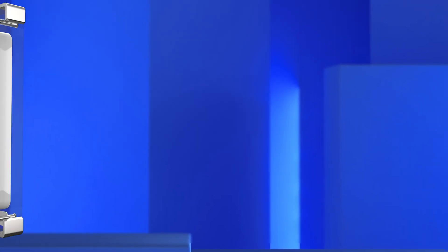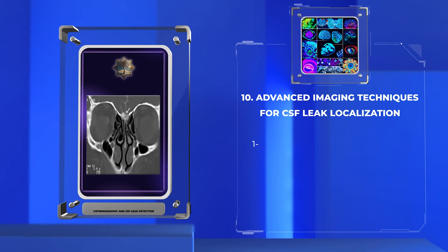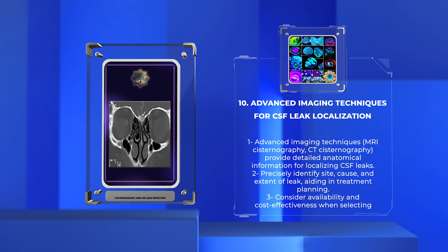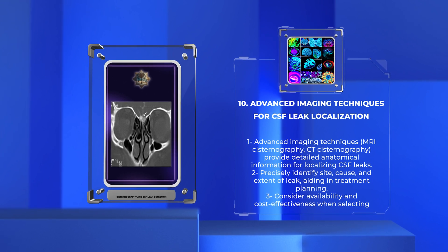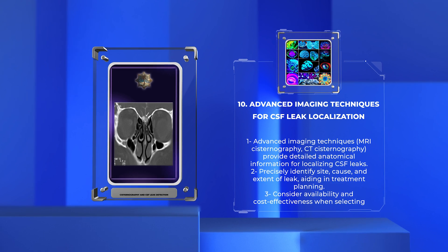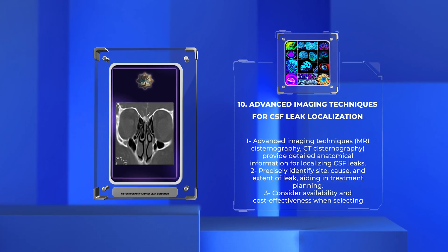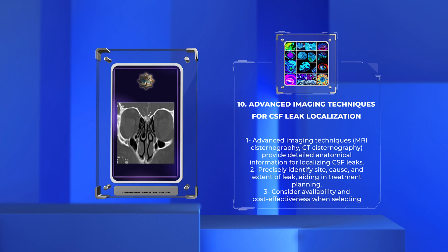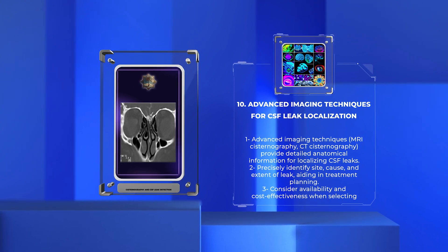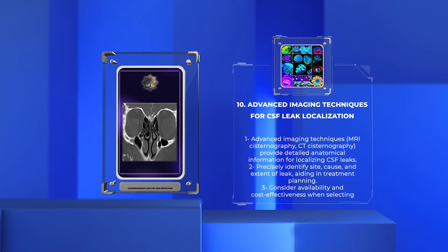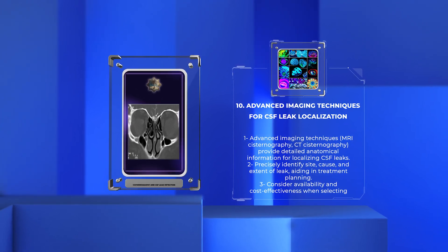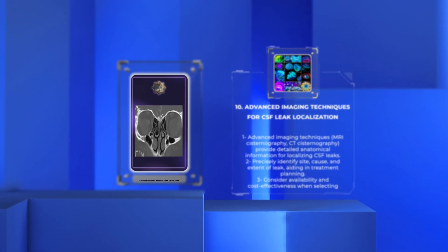Advanced imaging techniques, such as magnetic resonance cisternography and computed tomography cisternography, provide detailed anatomical information for localizing CSF leaks. These modalities can precisely identify the site, cause, and extent of the leak, aiding in treatment planning. However, their availability and cost-effectiveness need to be considered when selecting the appropriate imaging modality. The camera shifts to the professor's slide showcasing images from MR cisternography and CT cisternography.